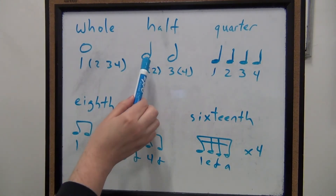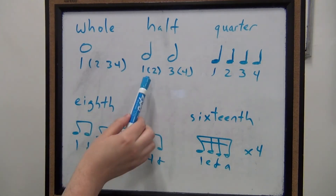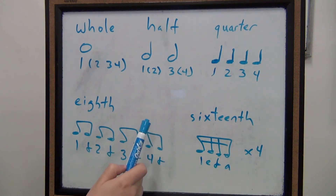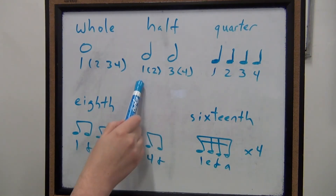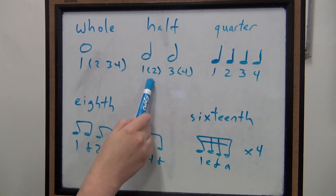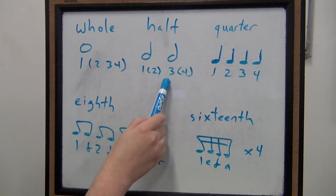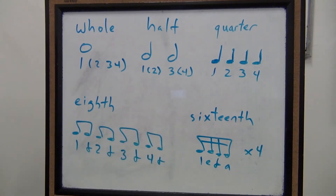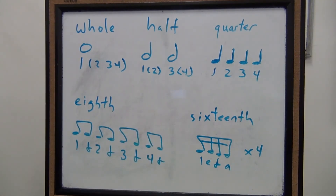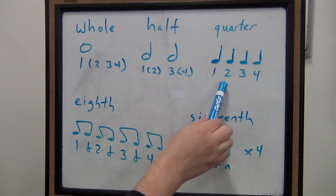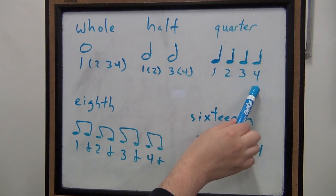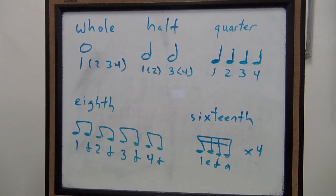For the half note, if it has that stem, now it's two beats — so we're going to think one, three. And after that, we have our quarter notes. For those, we're going to think one, two, three, four.